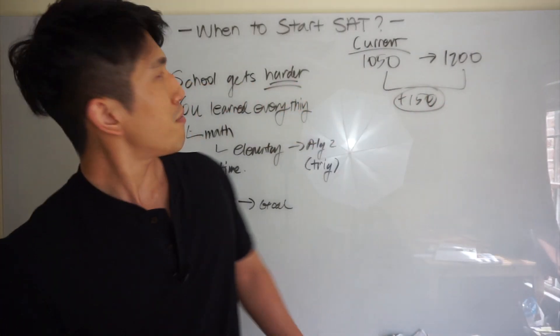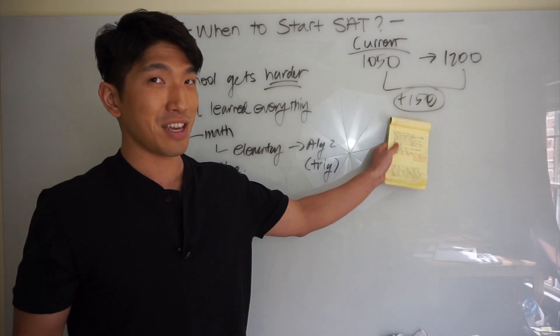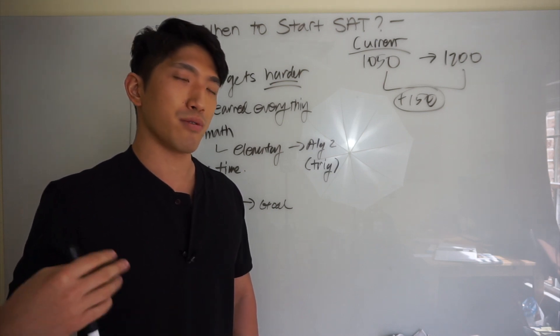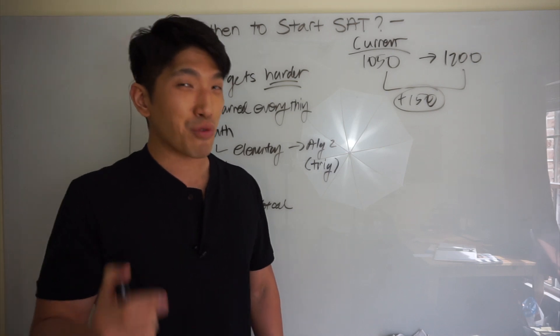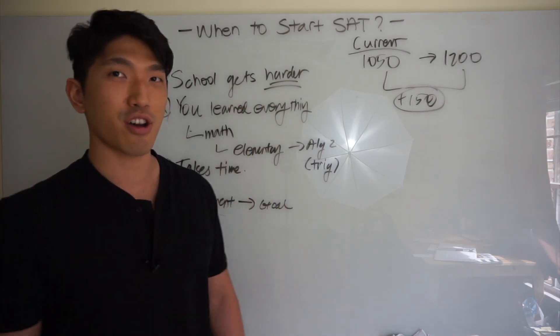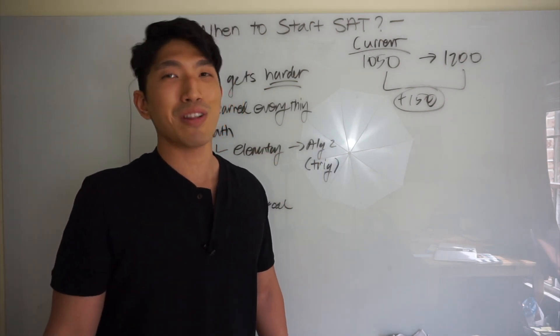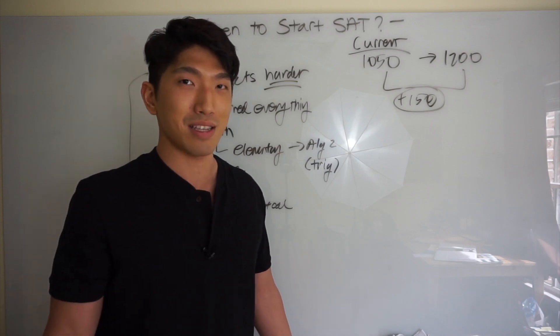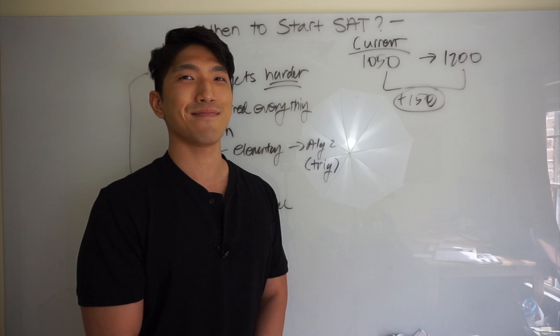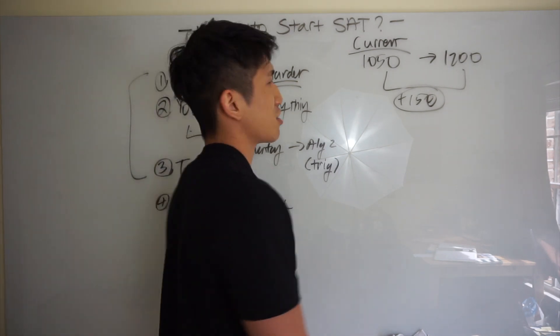To raise 150 points from 1050, it's really not going to take too much time. If I were in this situation, if you're something like here, then I would just wait until junior year, then start working on a little bit of math, a little bit of reading and writing, and you should be able to raise your score. But honestly, if I really were you, I would just get started my sophomore year because you already learn everything. And you have more time in your sophomore year than in your junior year. Just get started early, maybe finish before even junior year starts.